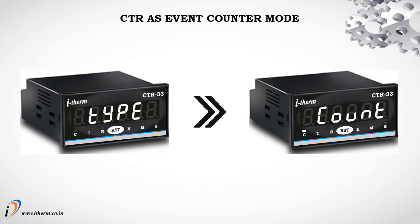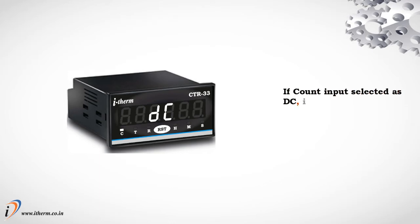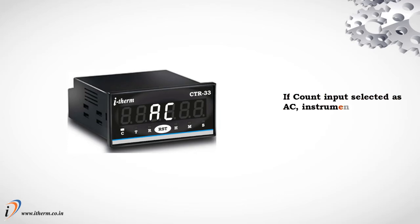CTR as event counter mode. Parameter 2: Count input type. By this parameter, the user can select between AC or DC as count input. If count input is selected as DC, the instrument will count pulses from a proximity sensor or by potential-free contact. If count input is selected as AC, the instrument will count pulses from a 230 volt AC supply.